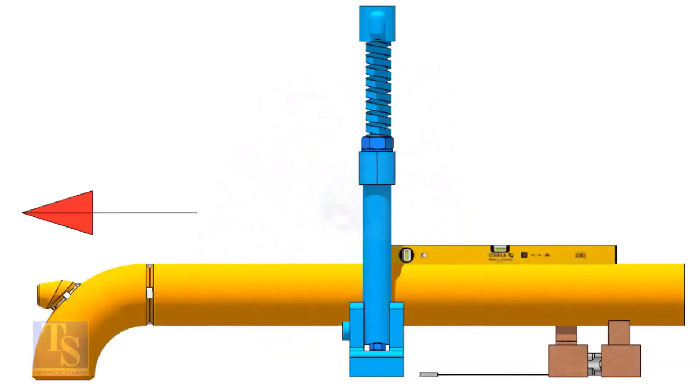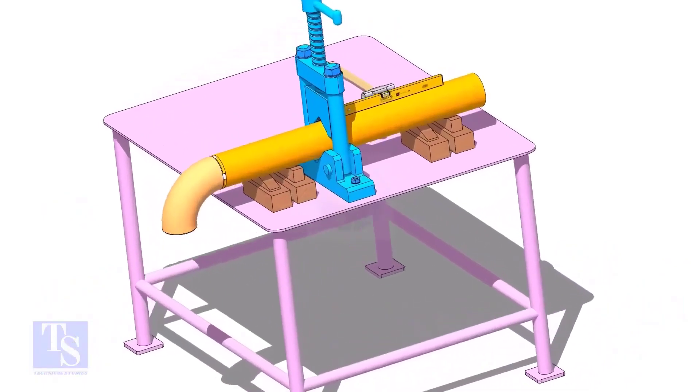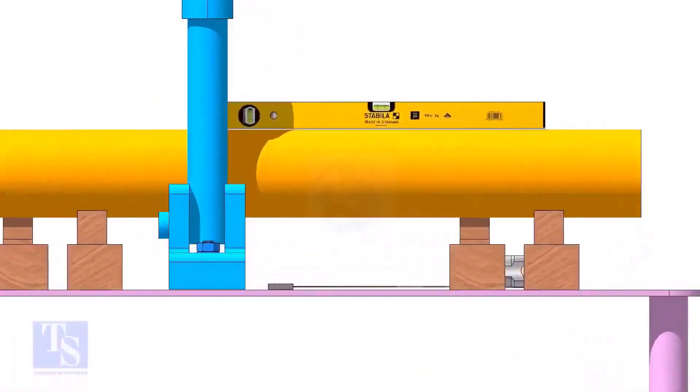I had seen guys making mistakes when they fix the direction of the elbow. Please be careful. Level the pipe and the elbow face. If necessary, put packings below the pipe.